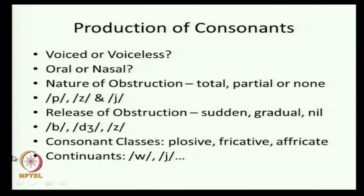If it is total obstruction, how is it released? Is it sudden, as in the production of 'pa,' 'ba' — in our languages those are the labial sounds, produced from the lips: 'pa,' 'pha,' 'ba,' 'bha'? The fifth sound is 'ma' — nasal, but labial closure is important to the production of 'ma.' Again, if it is complete closure, we again have a choice: either sudden release, or gradual release, or in rare cases the question of release does not arise.